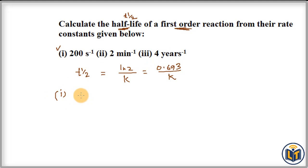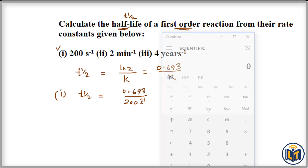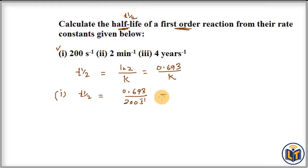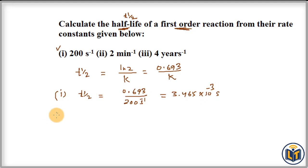For the first part, K = 200 per second. So T½ = 0.693 / 200. Dividing these values gives us 3.465 × 10⁻³ seconds. Therefore, the half-life is 3.465 × 10⁻³ seconds.